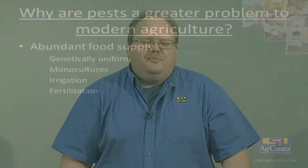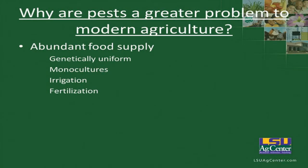Pests are greater in modern agriculture than they were in the past. We provide an abundant food supply — when we plant our crops, we provide a genetically uniform field for pests to feed on.